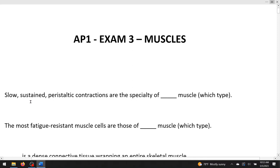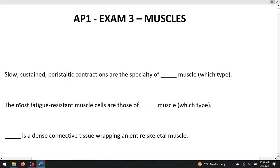Slow, sustained, peristaltic contractions are the specialty of blank muscle, which type. So you got three choices here: smooth, cardiac, or skeletal. And peristalsis, of course, is always done by smooth muscle. The most fatigue-resistant muscle cells are those of which type. And that's going to be cardiac because we don't want our heart to fatigue.